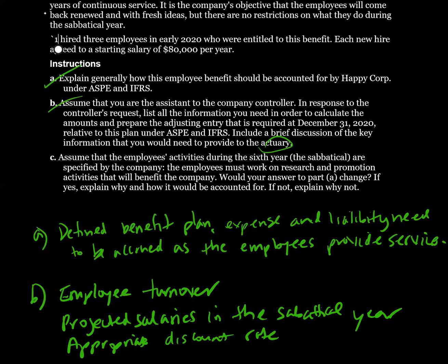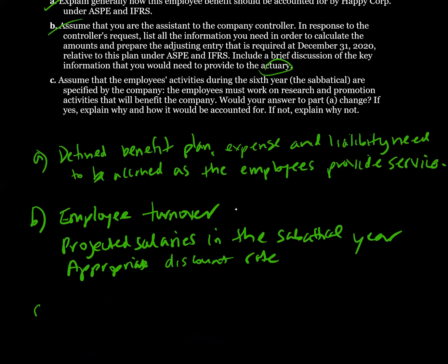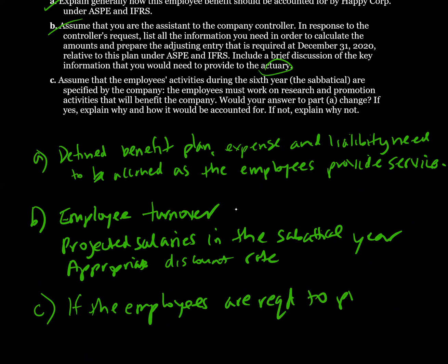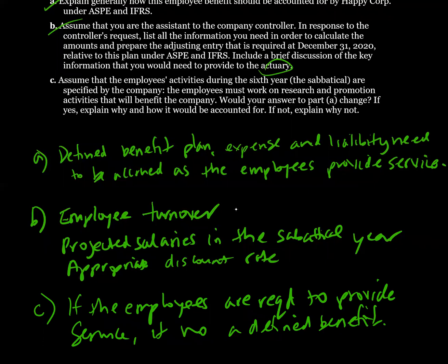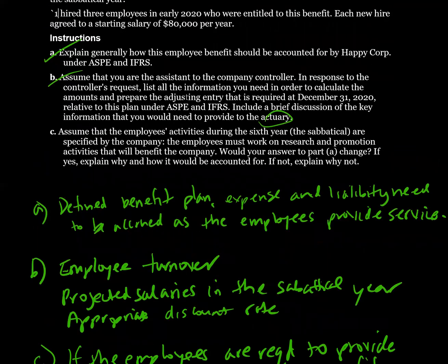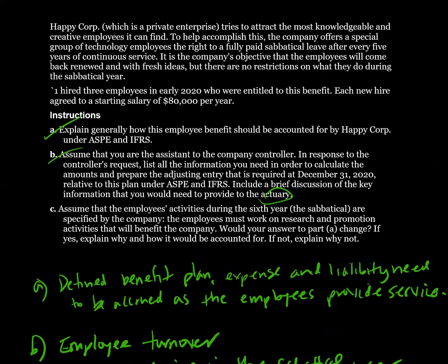Part C assumes that the employees' activities during the sixth year — the sabbatical — are specified by the company. The employees must work on research and promotion activities that will benefit the company. Would your answer to Part A change? Well, if the employees are required to provide service, it's no longer a defined benefit plan just because they're doing something different. They're still going to be providing service in the sabbatical year, just a different type of service. Therefore, we would just account for payroll as normal and wouldn't need to worry about a different benefit expense or any liability for future time off.